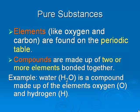Elements and compounds are both pure substances. An element, like oxygen or carbon, is found on the periodic table. Compounds are made up of two or more elements bonded together. For example, water is a compound made up of the elements oxygen and hydrogen.